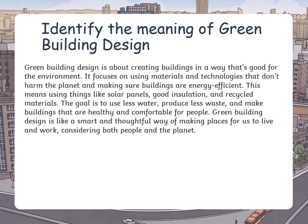Then moving to identify the meaning of green building design. Green building design is about creating buildings in a way that's good for the environment. It focuses on using materials and technologies that don't harm the planet and making sure buildings are energy efficient. This means using things like solar panels, good insulation and recycled materials. The goal is to use less water, produce less waste and make buildings that are healthy and comfortable for people. Green building design is like a smart and thoughtful way of making places for us to live and work, considering both people and the planet.